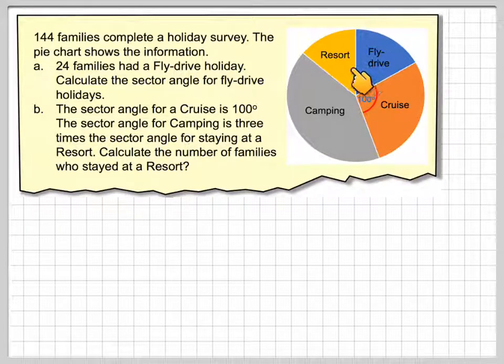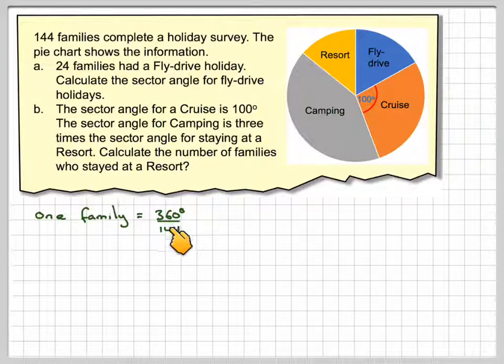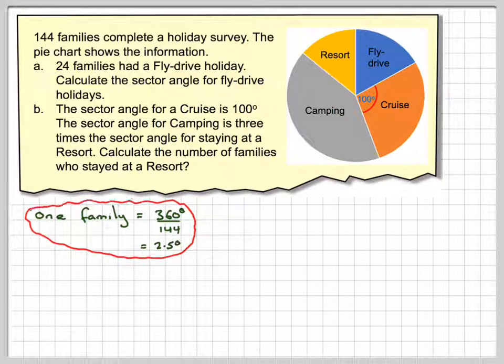We're going to calculate this angle here for the pie chart. One family is equal to 360 degrees divided by 144, because there are 144 families to begin with and there are 360 degrees in the circle. So one family is represented by 2.5 degrees.